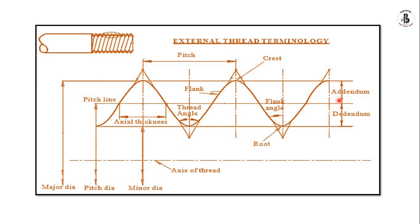Addendum and dedendum are also key terminologies. Addendum is the distance from the pitch line to the crest, measured perpendicular to the axis. Dedendum is the distance from the pitch line to the root. These represent the upward and downward distances from the pitch line respectively.